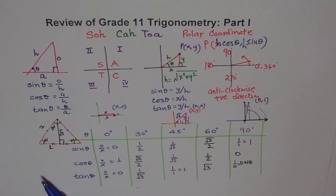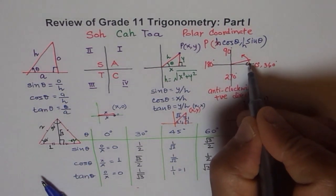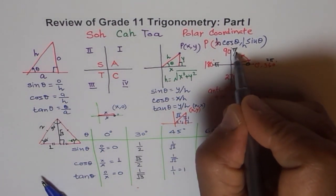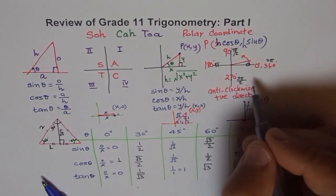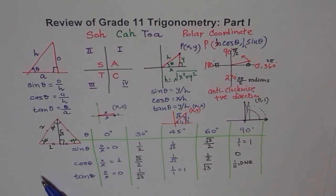This review page summarizes grade 11 content we'll soon be using. The key difference in Advanced Functions is we'll introduce radians. Instead of degrees 0 to 360, we'll use radians from 0 to 2π, where 90° = π/2, 180° = π, and 270° = 3π/2.